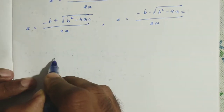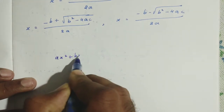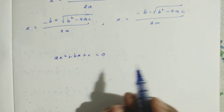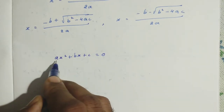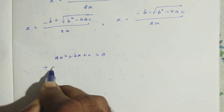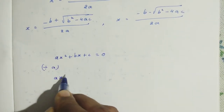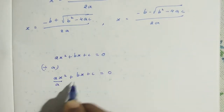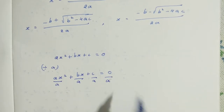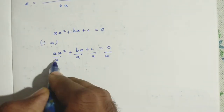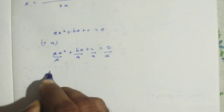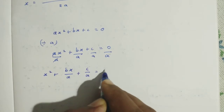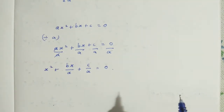We all know that AX squared plus BX plus C is equal to 0 — it is a quadratic equation. In the completing square method, we first make the coefficient of X squared equal to 1. So we divide the entire equation by A: AX squared plus BX plus C equals 0, each term divided by A. After cancelling, we get X squared plus BX over A plus C over A equals 0.